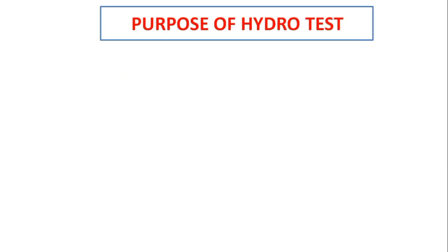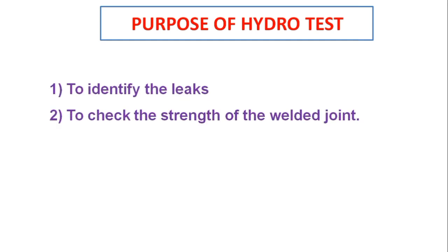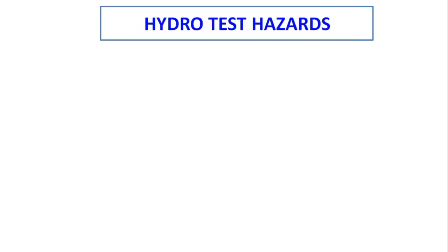The main purpose of hydro testing is to identify leaks, to check the strength of the welding joints, and to check the capacity of the system. It is done before putting the equipment into operation and use.